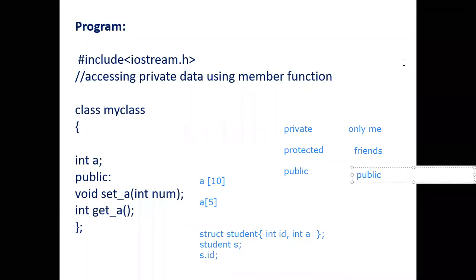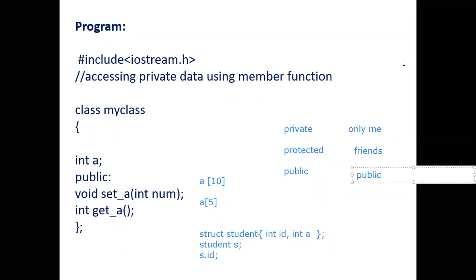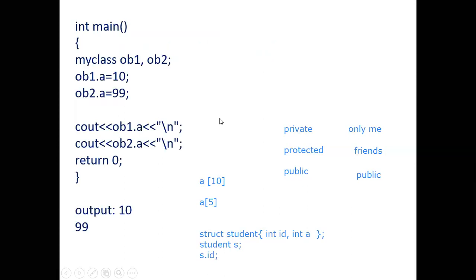In C++, to make it object-oriented programming, we added different features. C was a language that had many challenges, so we added features to make it an object-oriented programming language, and one of these features is access modifiers. Now let's go to the code.